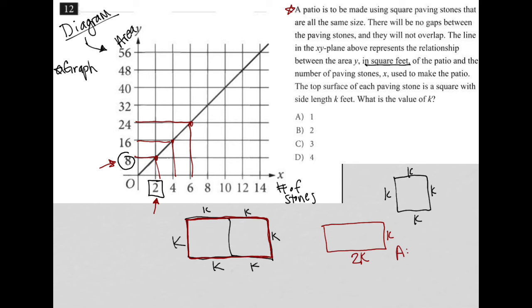My area is base times height, or length times width, which would be 2k times k, or 2k squared. The graph tells me that that's equal to eight.